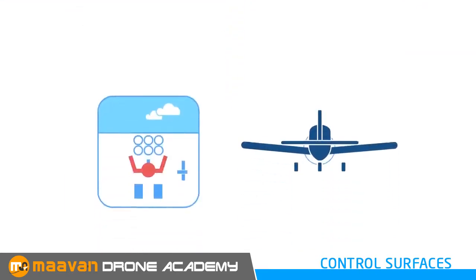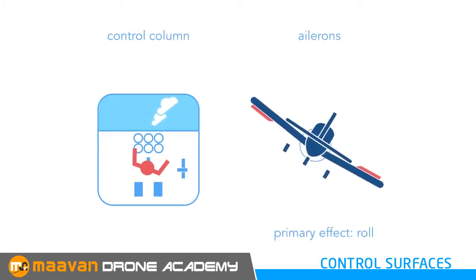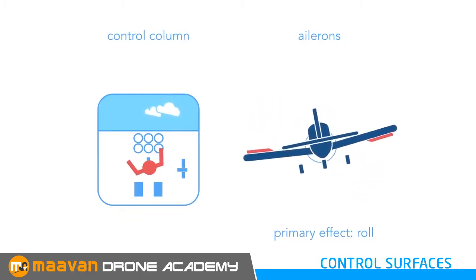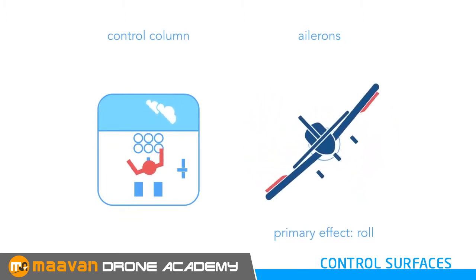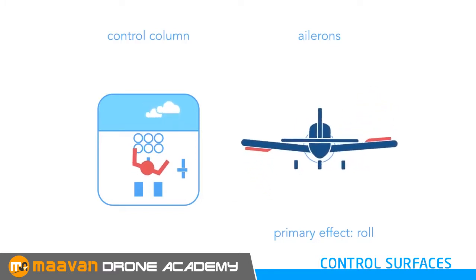The ailerons function in opposition. As one moves up, the other moves down. The pilot uses the control column to operate the ailerons by turning it right or left. The primary effect is a roll about the aircraft centre of gravity.